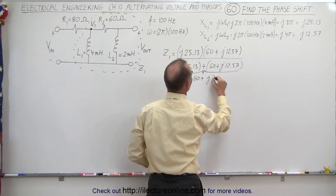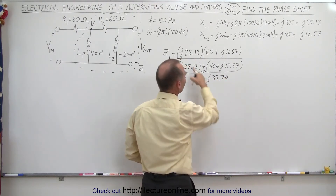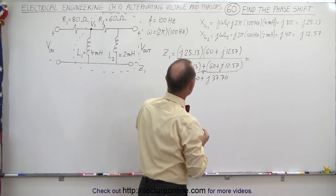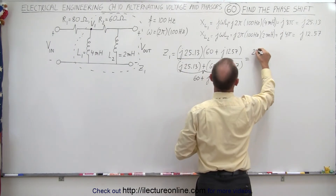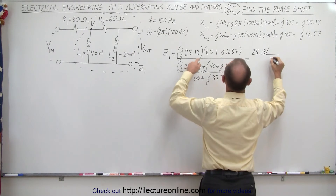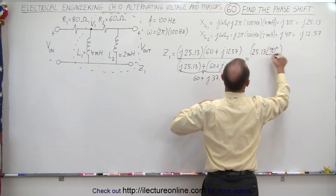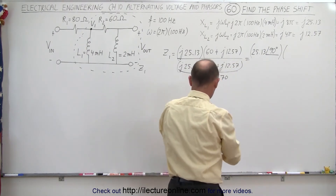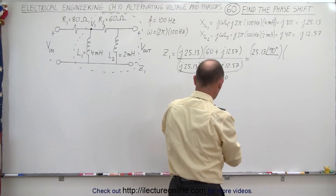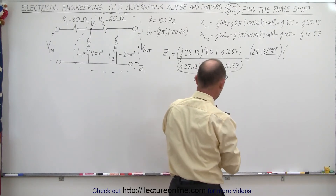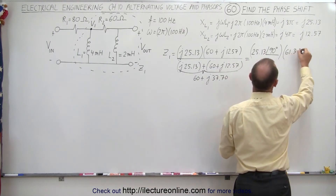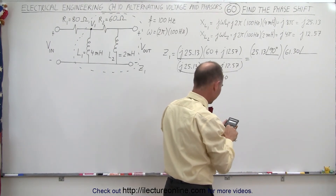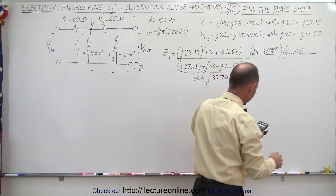Now when we convert all this, let's see what we get. The numerator — that would be 25.13 with an angle of 90 degrees. That's going to be multiplied times this. So the magnitude of that would be the square root of 3600 plus 12.57 squared, which is 61.30, with an angle of the inverse tangent of 12.57 divided by 60, which is 11.83 degrees.